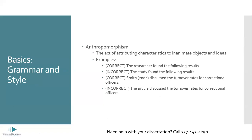Anthropomorphism is another thing we need to think about. It is the act of attributing characteristics to inanimate objects and to ideas. 'The researcher found the following results' is correct, whereas 'the study found the following results' is anthropomorphic. The study is an inanimate object — it cannot find results. APA is very picky about avoiding anthropomorphism. Being clear on who is actually doing the action, who is finding the results, who is performing the study — these are things we have to think about.